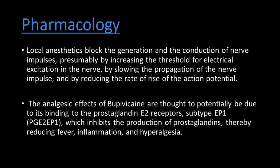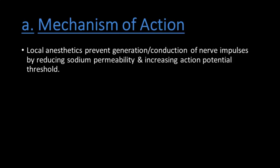Local anesthetics block generation and conduction of nerve impulses, presumably by increasing the threshold of electrical excitation in the nerve, slowing the propagation of the nerve impulse, and reducing the rate of rise of action potential. The analgesic effect of Bupivacaine is thought to be due to its binding with prostaglandin E2 receptor subtype, which inhibits the production of prostaglandin, thereby reducing fever, inflammation, and hyperalgesia. Hyperalgesia is the condition in which sensitivity to pain increases.